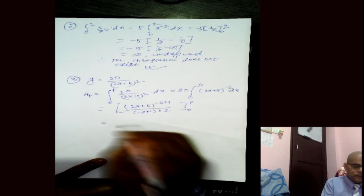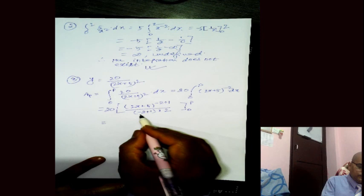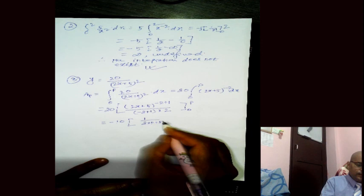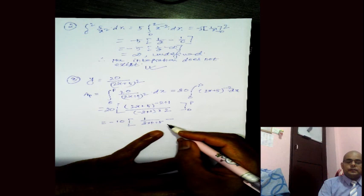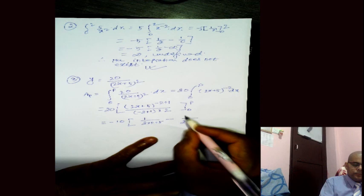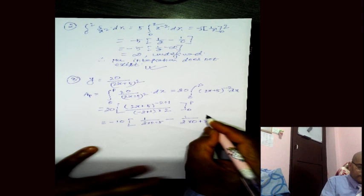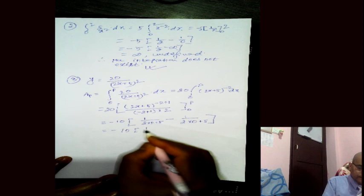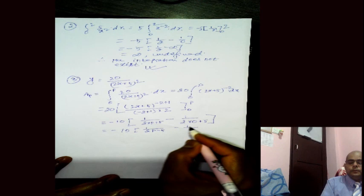Simplifying: 20 is outside, minus 2 plus 1 is minus 1, so dividing by minus 2 gives a factor of minus 10 outside. Then (2x + 5)^(minus 1) means 1/(2x + 5), so we get minus 10 times [1/(2p + 5) minus 1/(2(0) + 5)], which becomes minus 10 times [1/(2p + 5) minus 1/5].